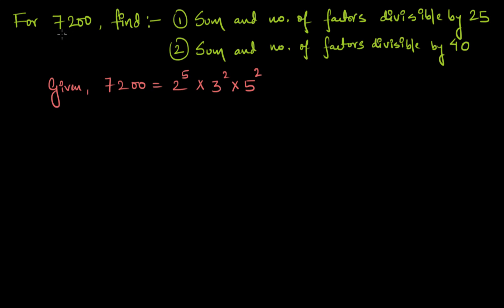For 7200, find the sum and number of factors divisible by 25, and the sum and number of factors divisible by 40. Before solving, let us first write down the sum of all the factors of 7200.